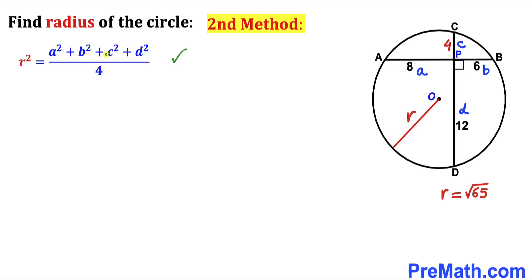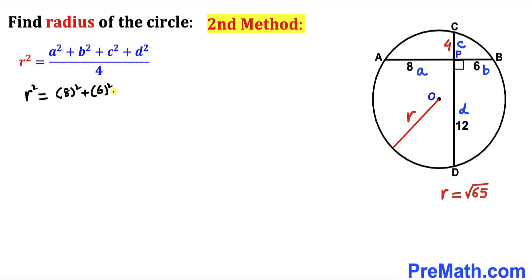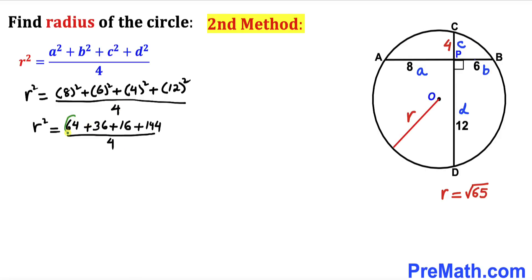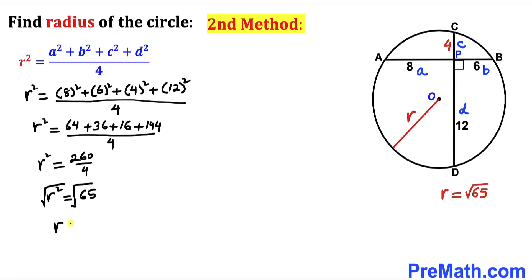We plug these values into the formula: R² = (a² + b² + c² + d²) / 4. Filling in the blanks: R² = (8² + 6² + 4² + 12²) / 4. That gives us (64 + 36 + 16 + 144) / 4 = 260 / 4 = 65. Therefore R² = 65, and taking the square root on both sides, radius R = √65 units.